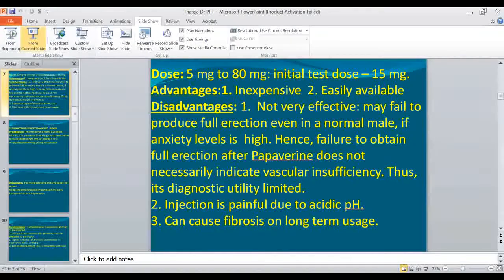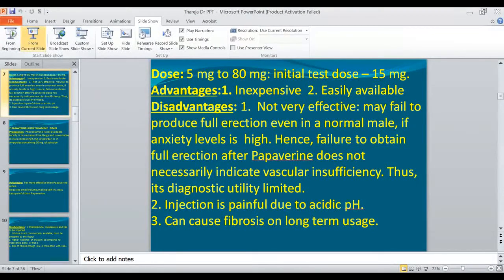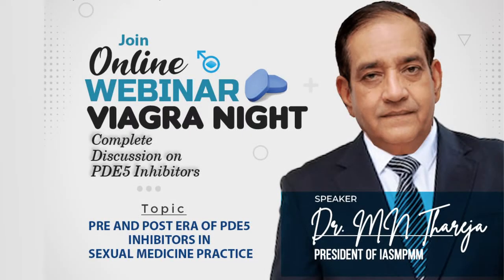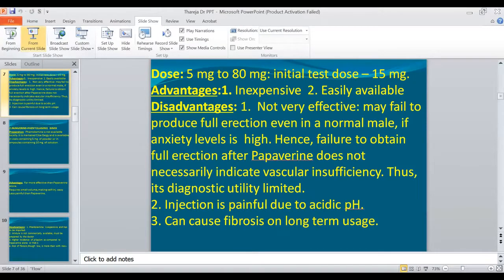Papaverine plus chlorpromazine is another bimix that must be prepared by the doctor — it is not commercially available. The disadvantage is a higher incidence of priapism compared to papaverine or PGE1. Then prostaglandin E1, which is a costly drug available in powder form, has to be prepared with 25 ml of distilled water and preserved in the refrigerator for up to 90 days. It can be used in doses of 2.5 micrograms to 40 micrograms.